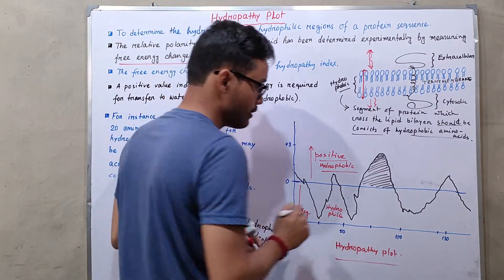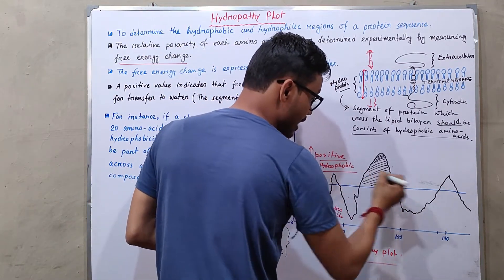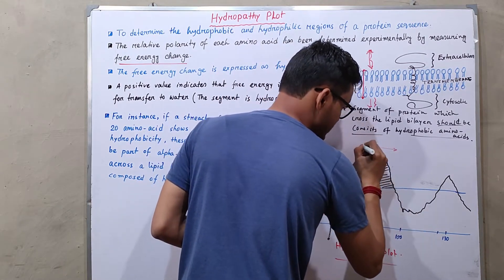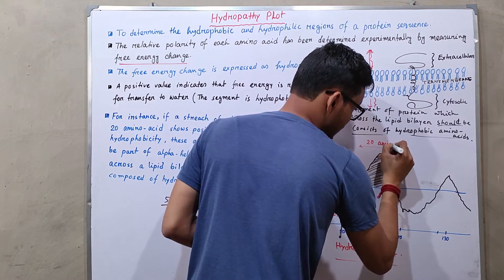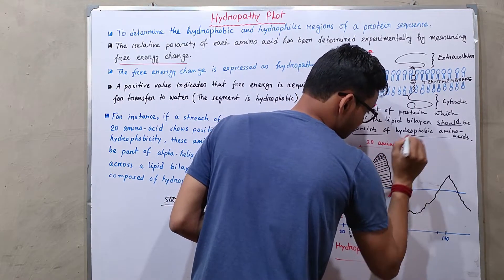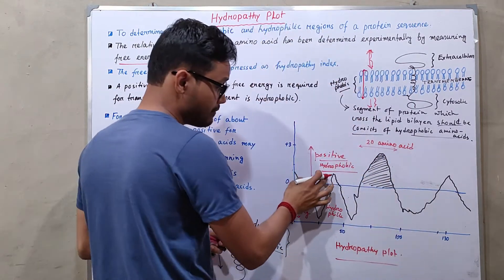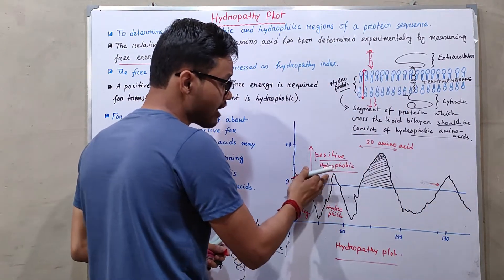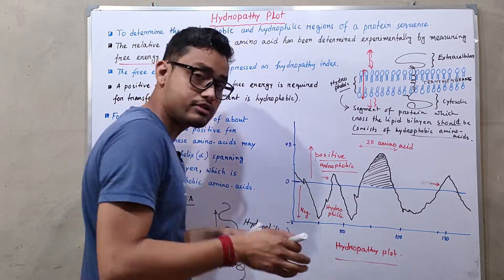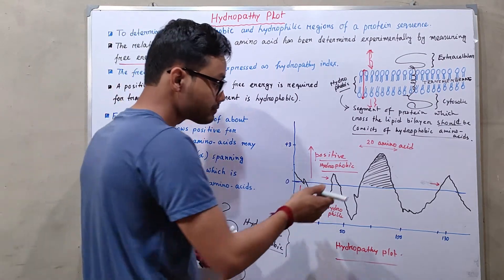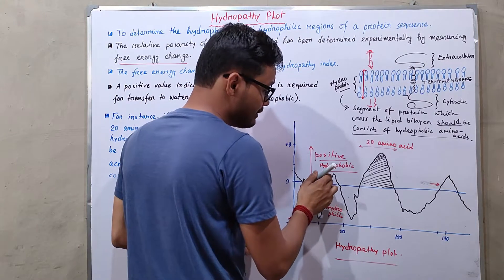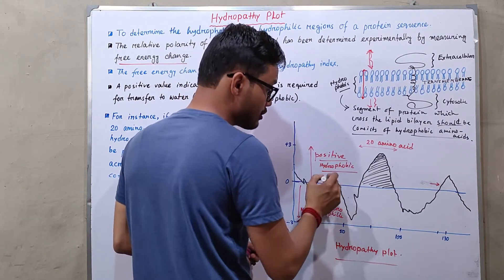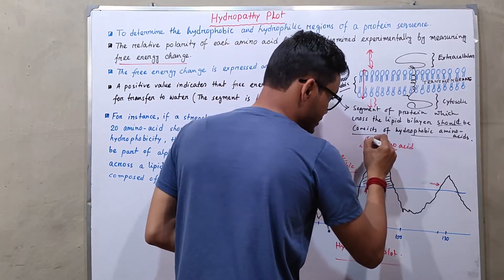There is one important condition: the spanning of the hydrophobic region should be approximately 20 amino acids. If a segment shows a positive (hydrophobic) value but does not span across 20 amino acids, we cannot conclude that this portion of the protein crosses the lipid bilayer.